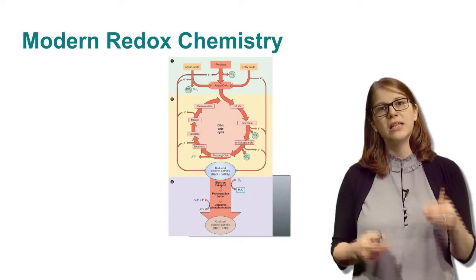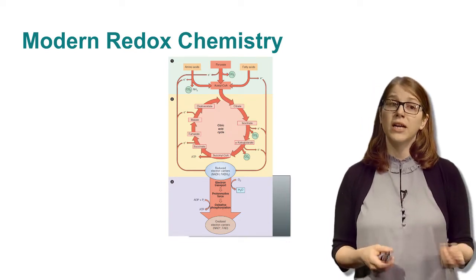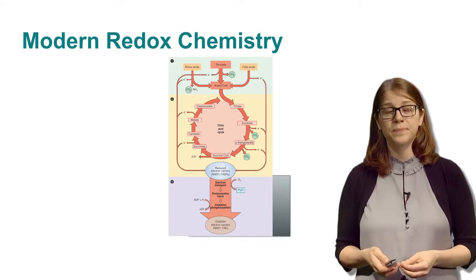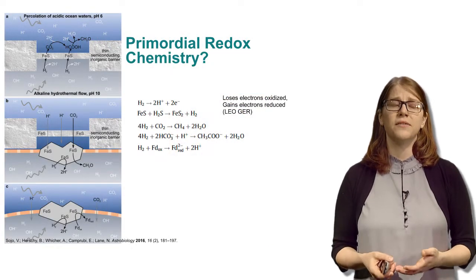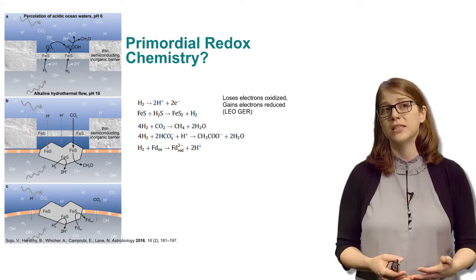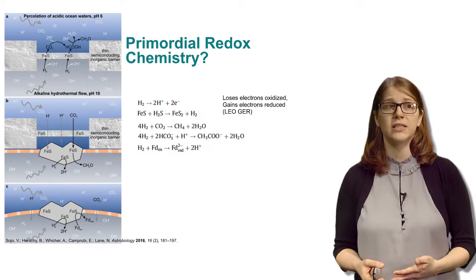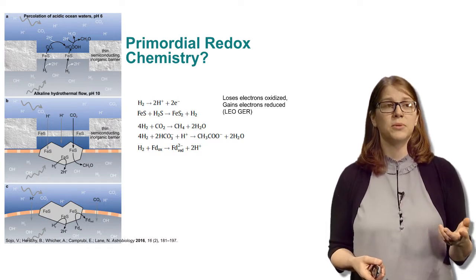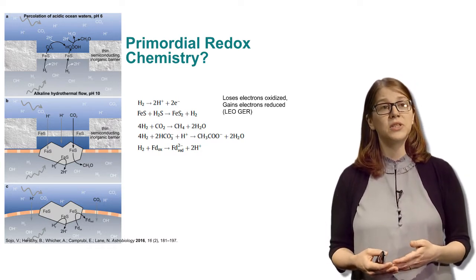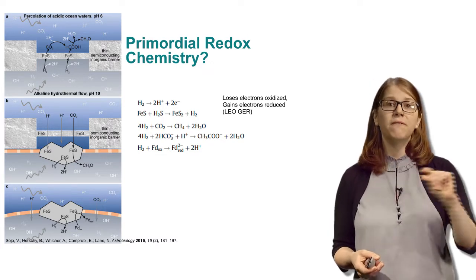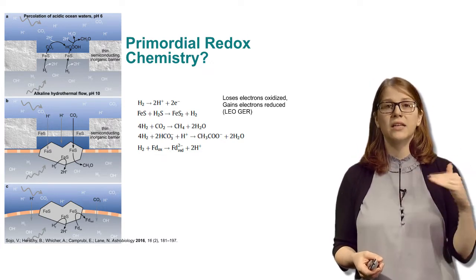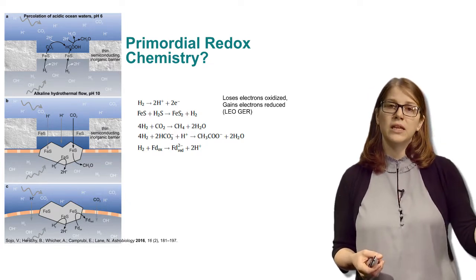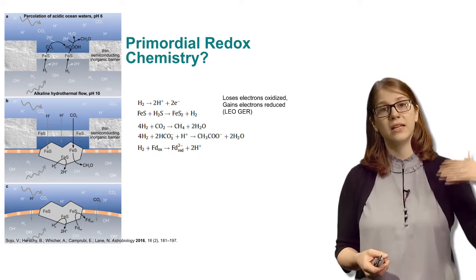So essentially we want to take these electrons, make a proton gradient that can then be used later to drive our ATP synthesis. What do we think of as our early redox chemistries, not like the modern redox chemistries that we see today? Nick Lane's group has proposed that in hydrothermal vents, you could get systems where you have a very fine layer of minerals that could act kind of as a porous membrane or an electron transfer membrane between an alkaline hydrothermal vent and an acidic ocean.